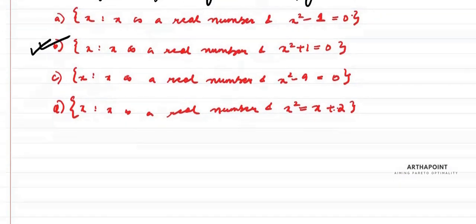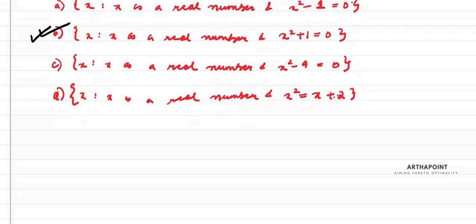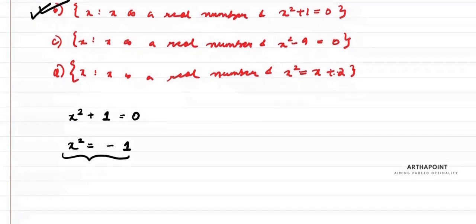Why? Because we know that if we take x² + 1 = 0, then this means that x² = -1. If x² is -1, then this is basically going to give a value of x which is a complex number in iota.